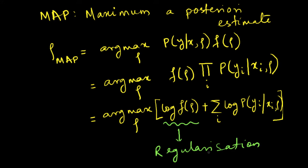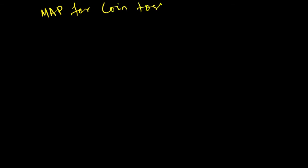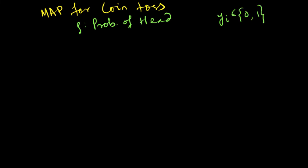Now let us go back to our favorite coin toss example and see how MAP estimation would be different from, or the same as, MLE. Here again, we do not have the concept of an input because the output only depends on the parameter.